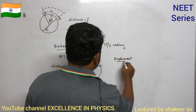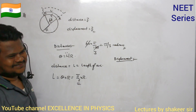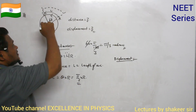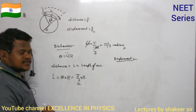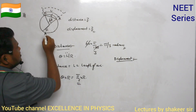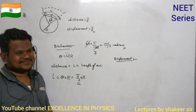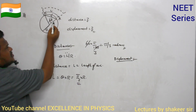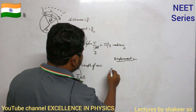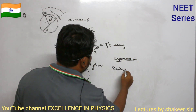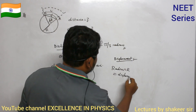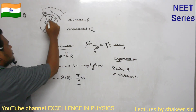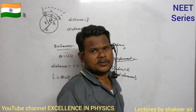Displacement is the straight-line distance between A and B. Since both OA and OB are radii (both equal to r) and the angle between them is 60°, the triangle OAB is equilateral. Therefore the chord AB = r. So displacement = r. That is the answer.